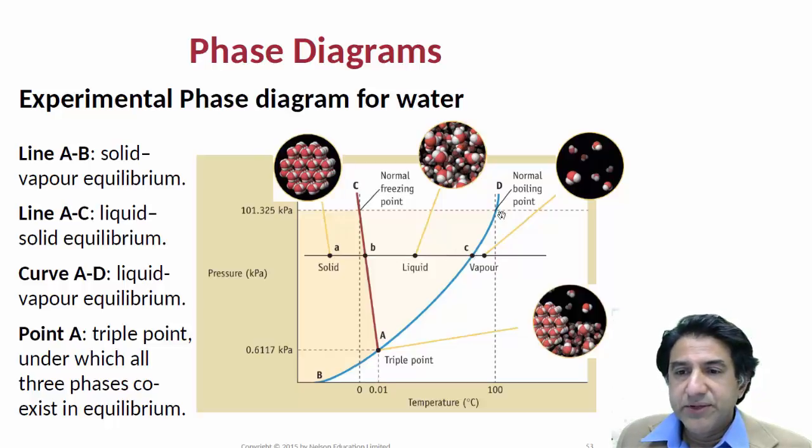Then we have the liquid line, and we reach this blue line here, which is the normal boiling point line, the liquid-vapour coexistence line. And these two lines, the melting point line and the boiling point line, meet at this particular point, which is called the triple point. It actually meets this line here, which is the sublimation line, where the solid goes directly to the gas.